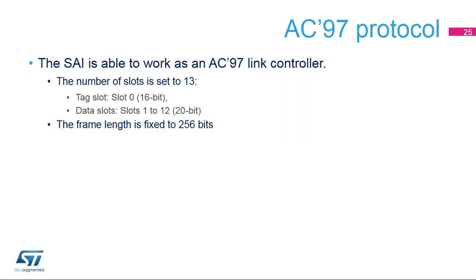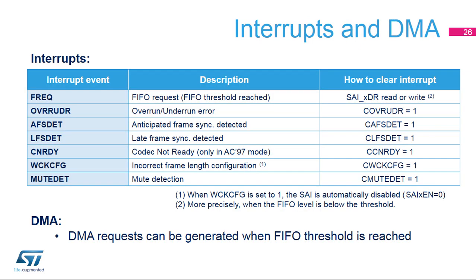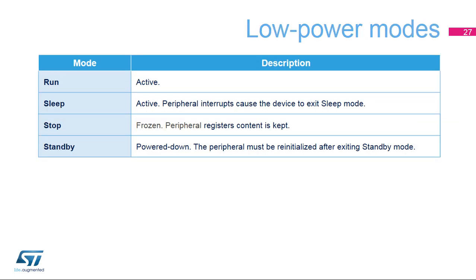The SAI is able to work as an AC97 link controller. When this protocol is used, the frame length, slot number, and slot length are set by the hardware. Several events can be enabled to generate interrupts. The WCKCFG event can be used to inform the user that the frame length of the SAI has been improperly programmed. This feature only makes sense in master mode. The following table shows an overview of the SAI activity for the various possible power modes. The SAI is active in run and sleep modes, frozen in stop mode, or powered down in standby mode. The SAI needs the bus interface clock, or APB clock, and the kernel clock, or SAI-CKX, to work properly.